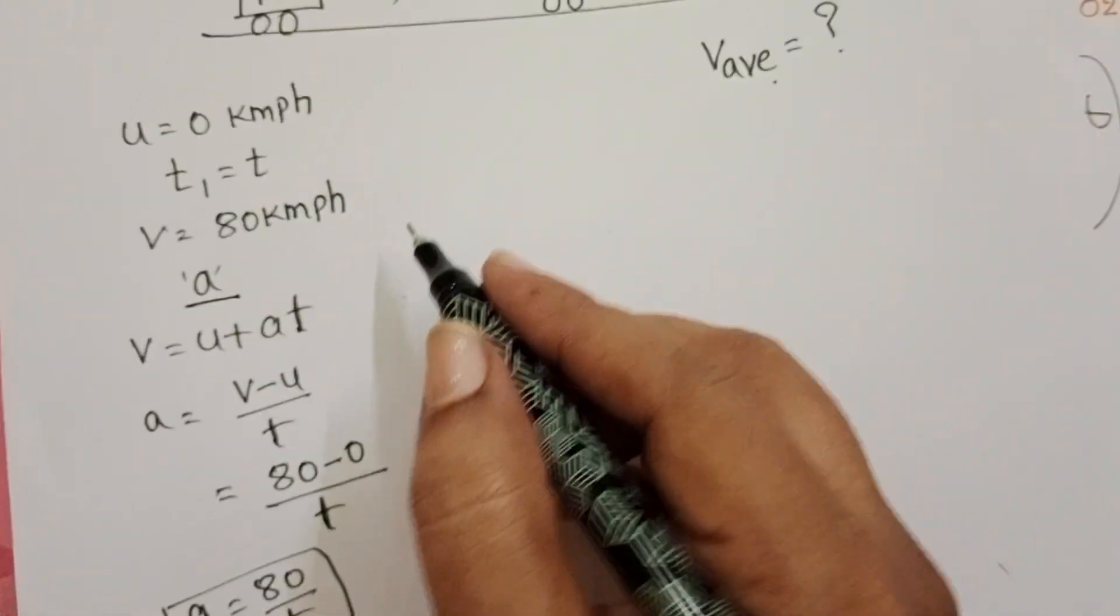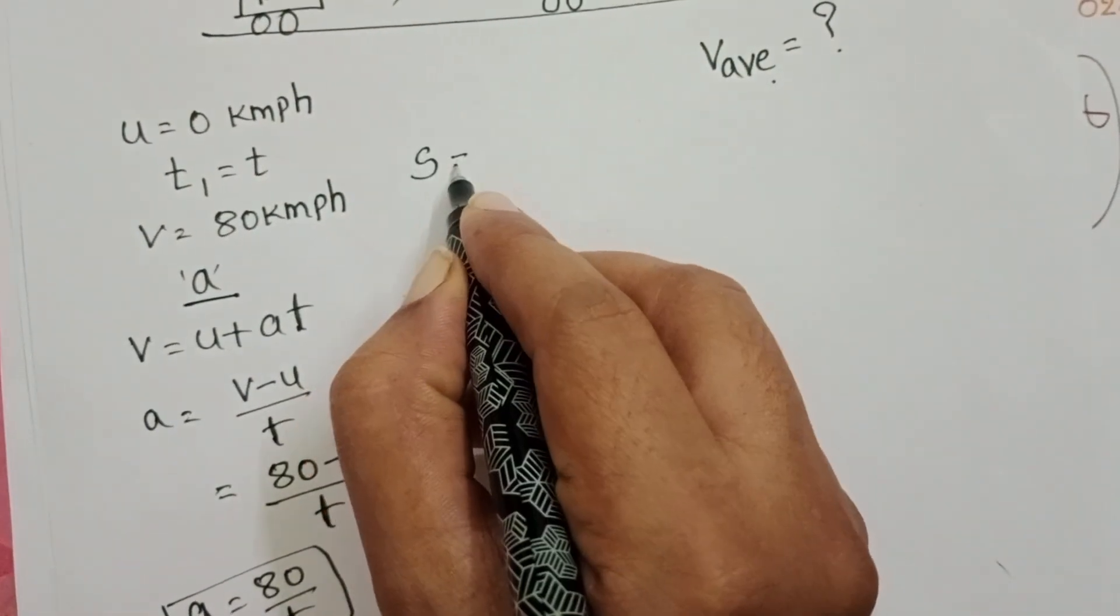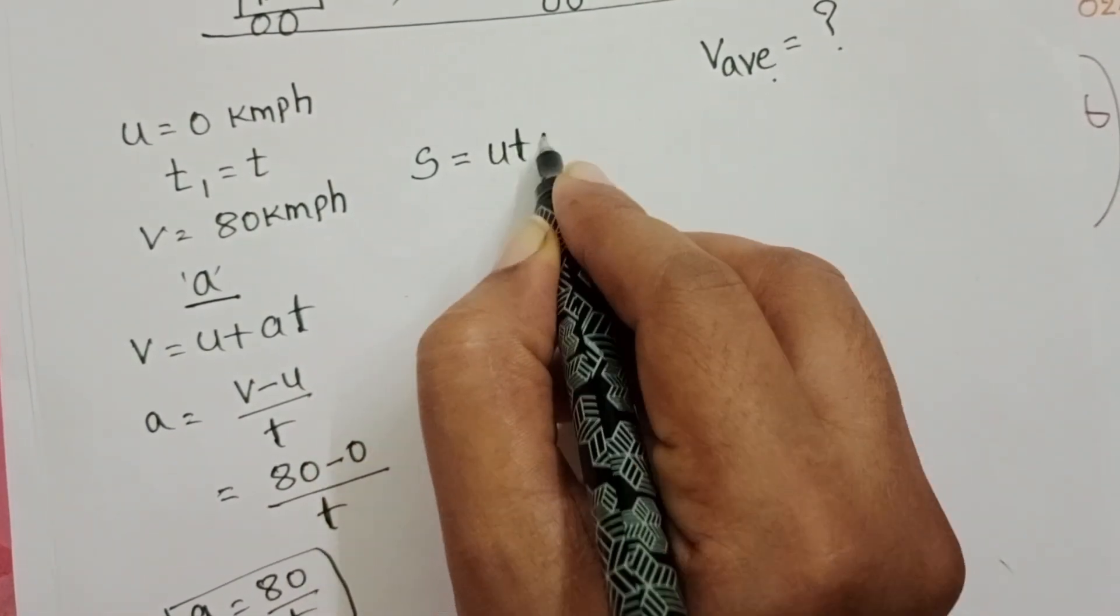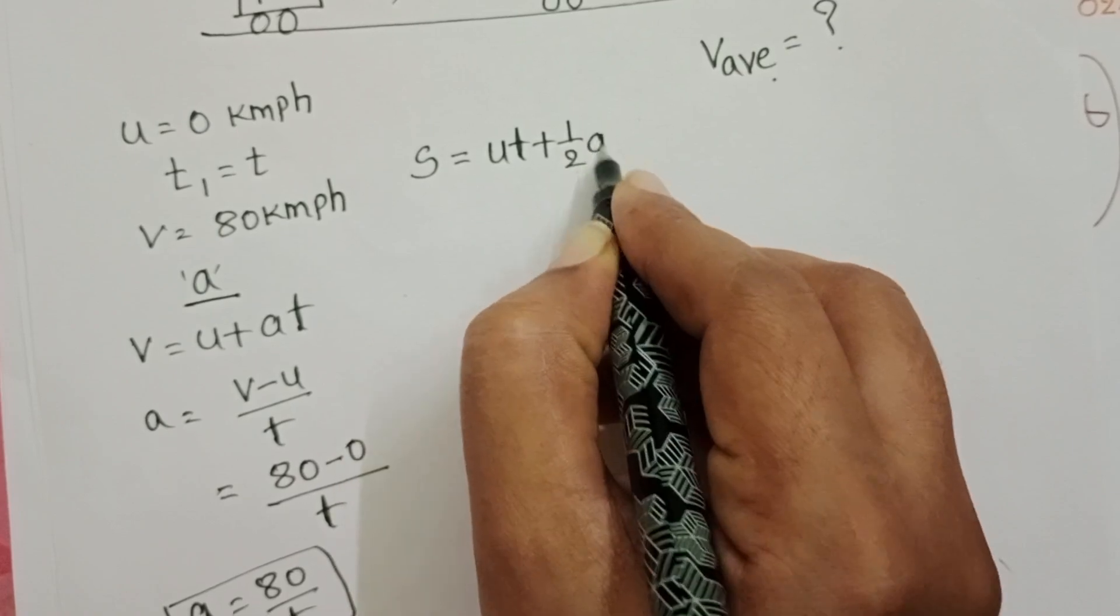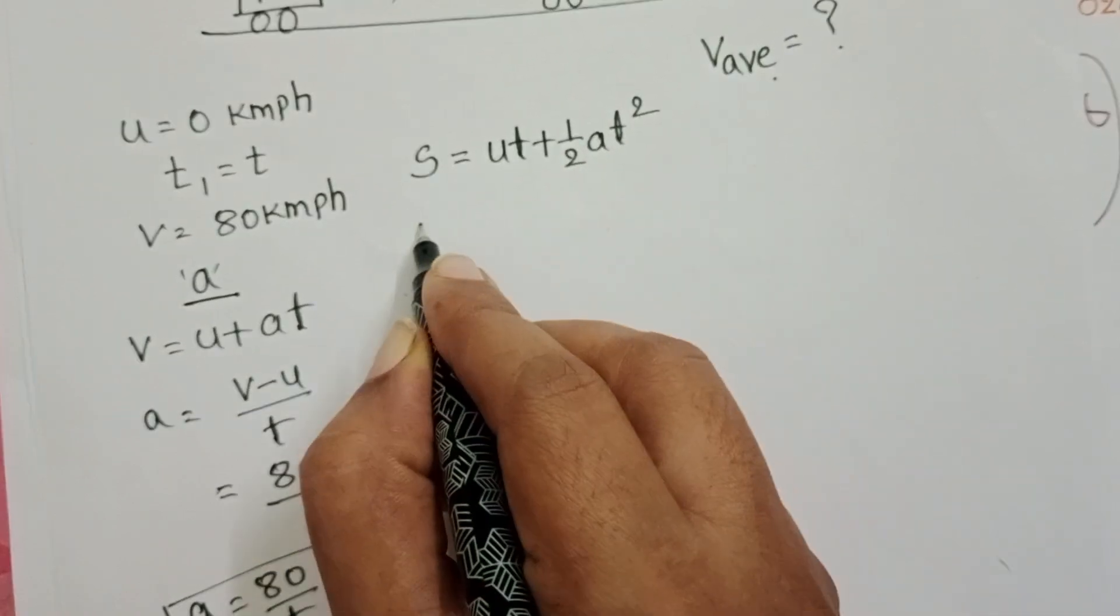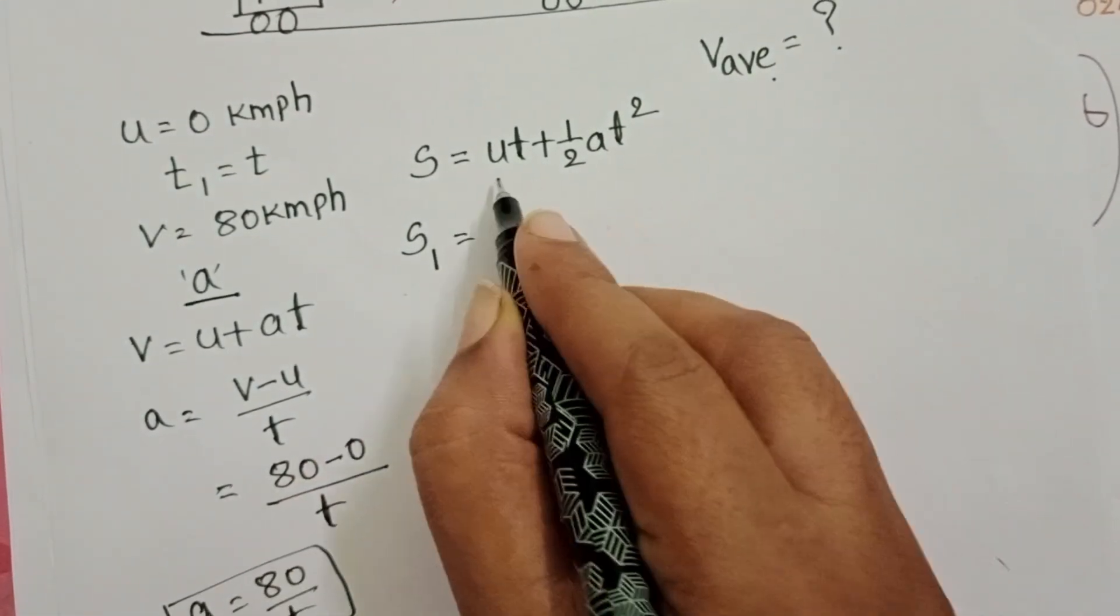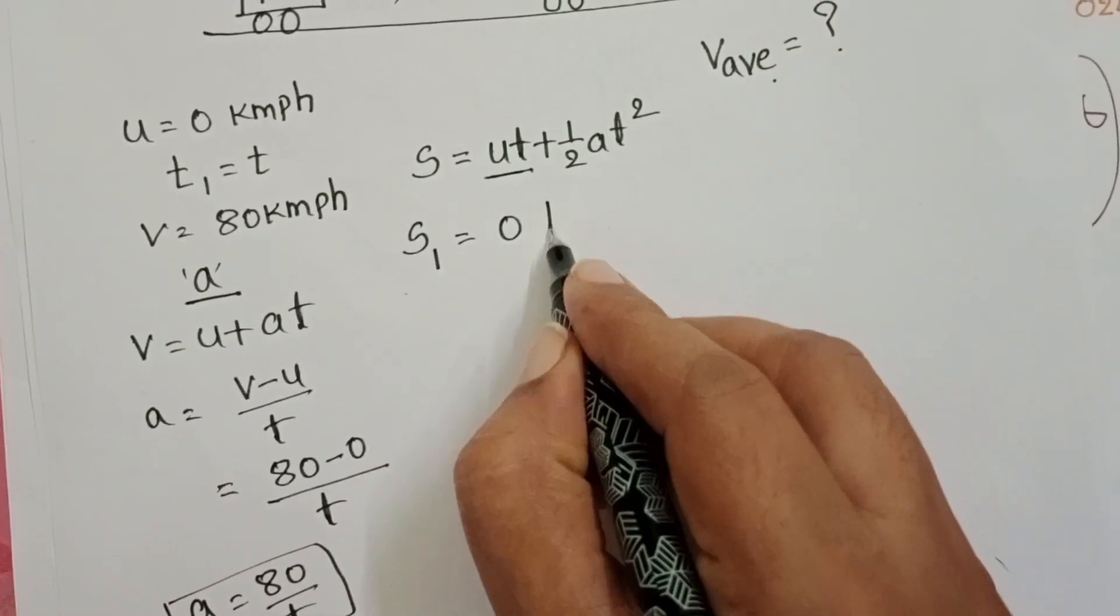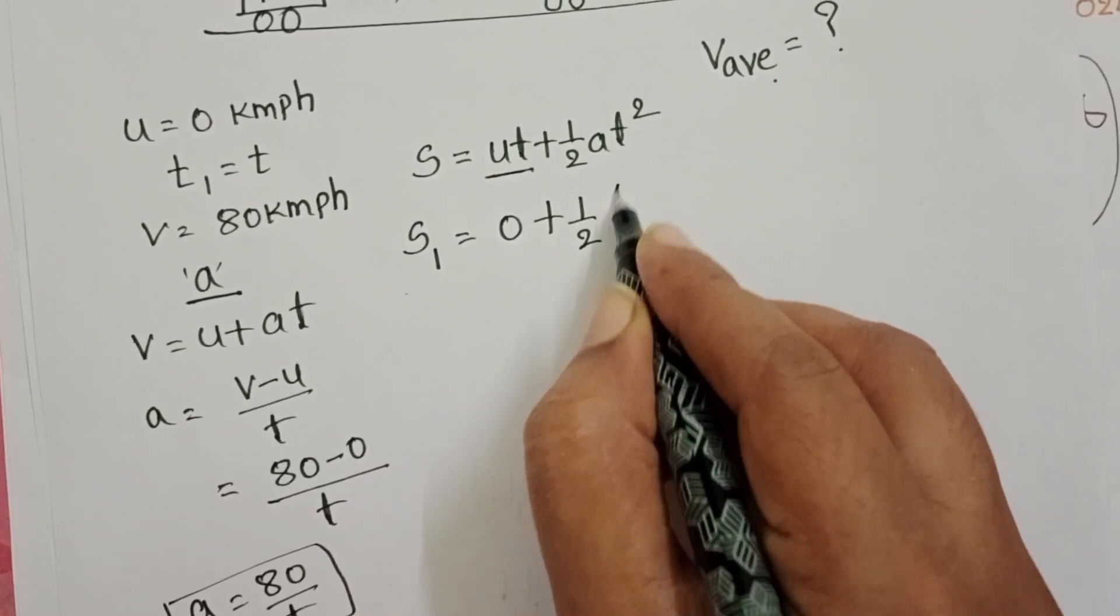Distance travelled by the train in time T. Take equation, S equals to UT plus half AT square. S1 is equals to, this term is 0 because U is 0. Half acceleration, 80 by T.